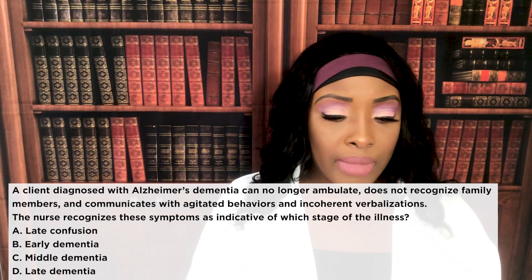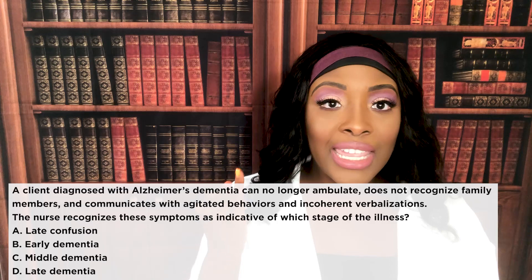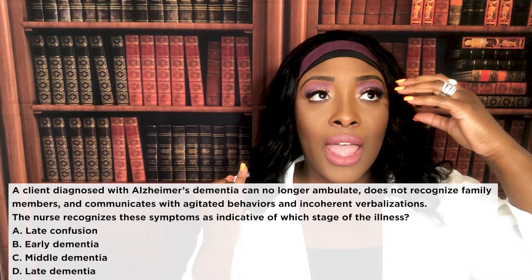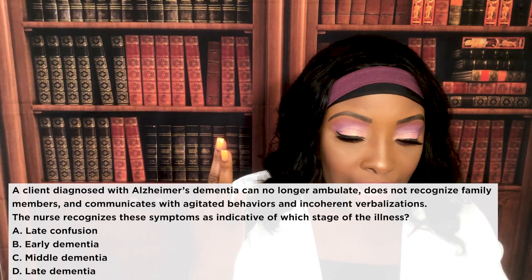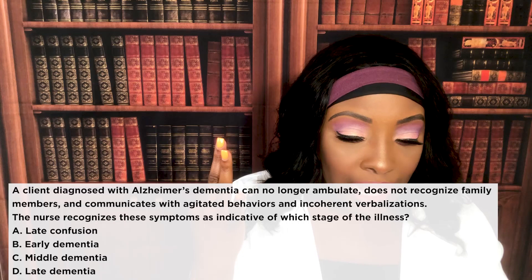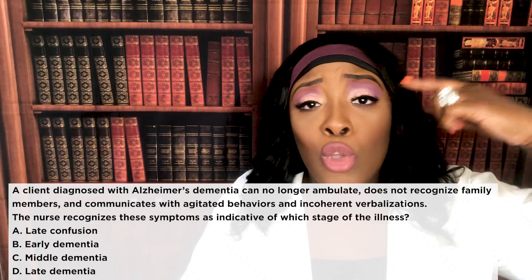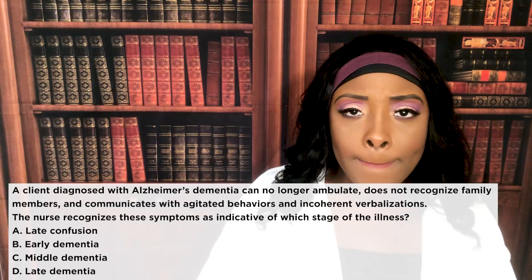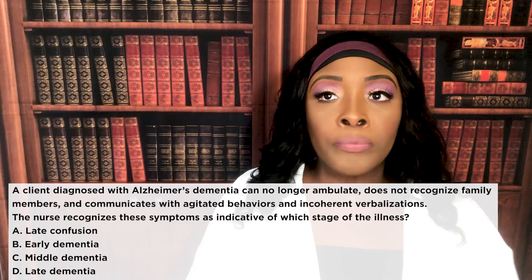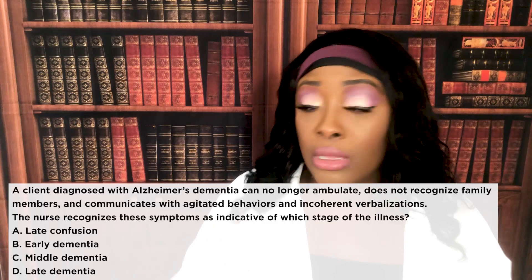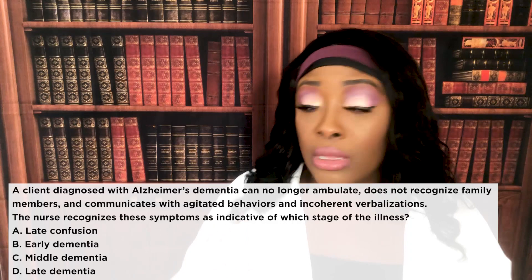The correct answer is D — late dementia. The clues are: they can no longer ambulate — their brain has deteriorated to the point they've forgotten how to walk; they don't recognize family members; and they communicate with agitated behaviors and incoherent verbalizations. They're frustrated because their brain can no longer form the words to come out of their mouth. In late stage dementia, a patient can be thirsty, see a glass of water, and not even recognize that the water is to drink.